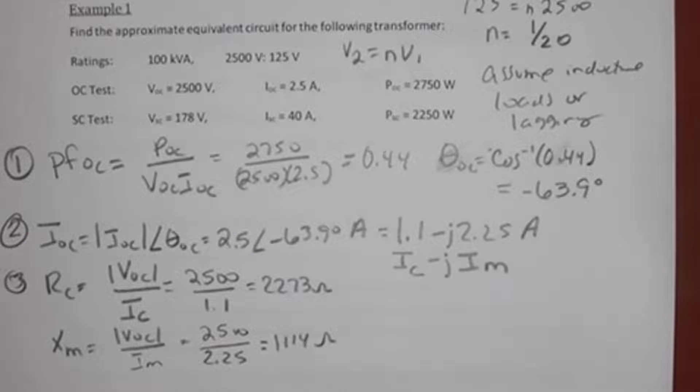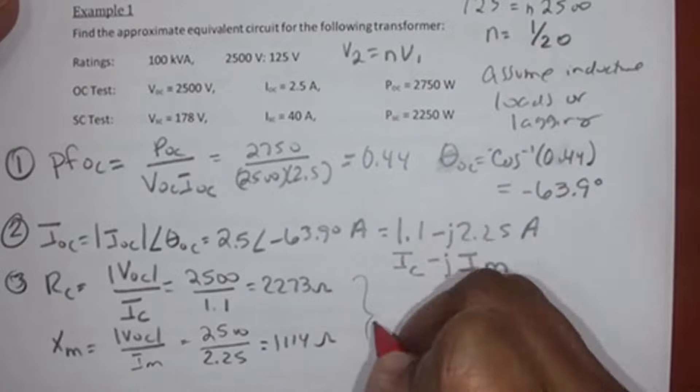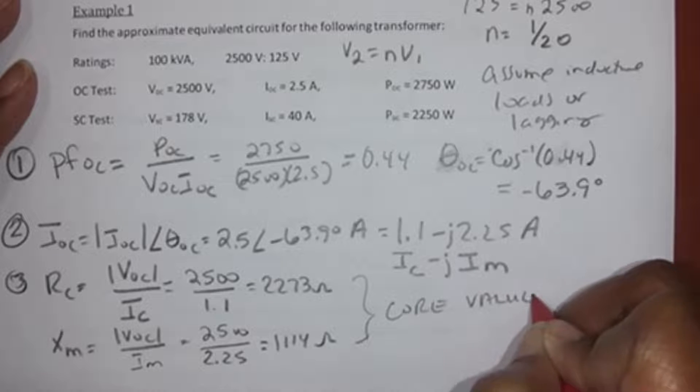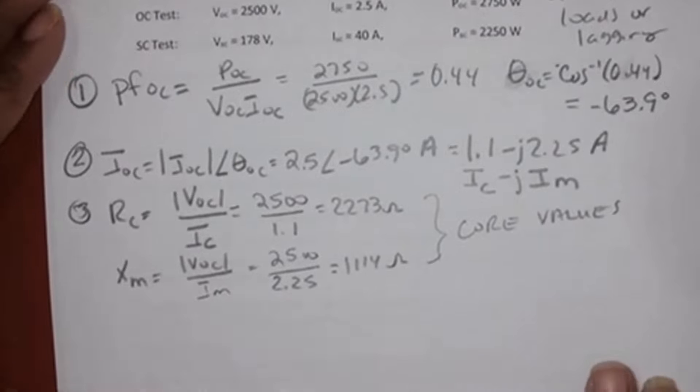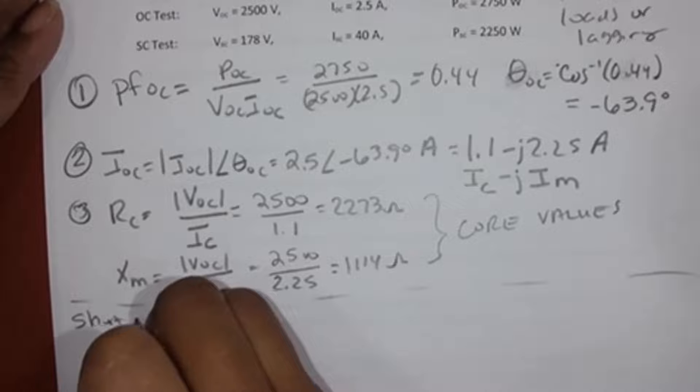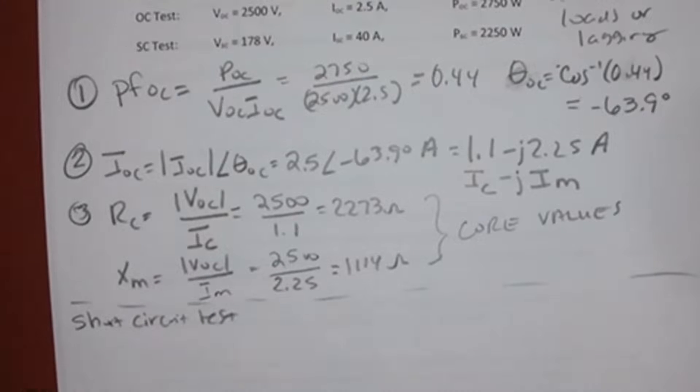So basically using these tests, you are finding all of the parameters for the transformer. So far we have found RC and XM and then you use the short circuit test to find Z, which is R and X. And these are our core values. So using the open circuit test, I found the core values. And now I'm going to use the short circuit test to find the coil values.